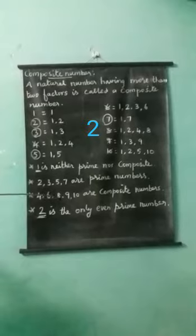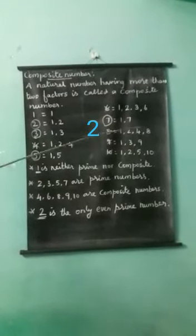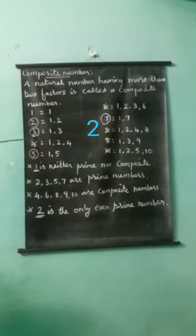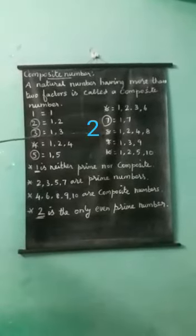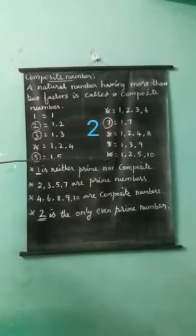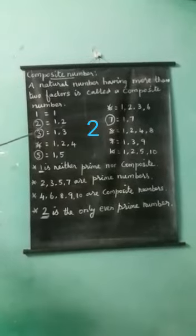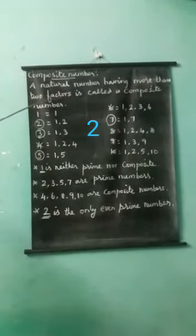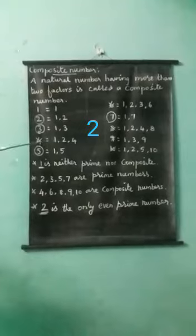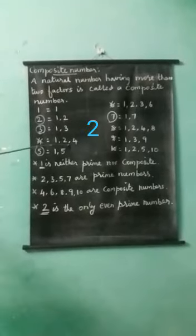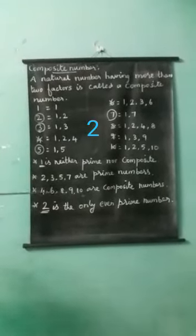Third: 4, 6, 8, 9, and 10 are composite numbers. These are the cross numbers. 4, 6, 8, 9 and 10 are composite numbers. Composite numbers mean the natural number having more than 2 factors — the numbers having more than 2 factors. Understood?